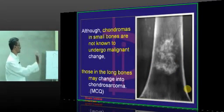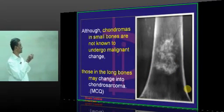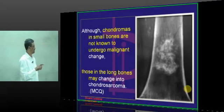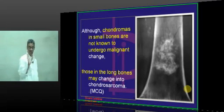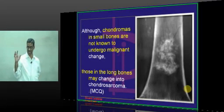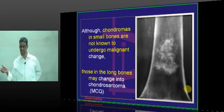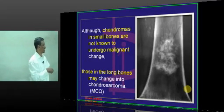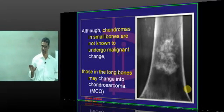Although chondromas occur in small bones, those in small bones are not known to undergo malignant change. However, those in the long bones may change into chondrosarcoma. So in small bones like hand and feet, they may not go into malignancy, but in the long bones the chance of malignancy is greater.